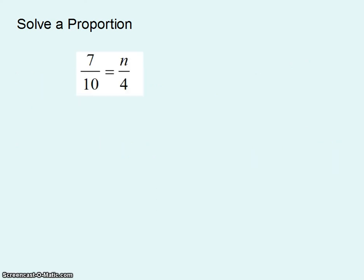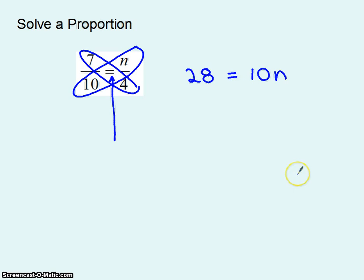So we're going to be solving this proportion here and the technique we'll use will be this. Multiply these two numbers together and you get 28. Multiply those two numbers together, you get 10n. Well the fact that there's an equal sign in the middle of this thing means that these two cross products have to be equal. Well if they're equal then we can easily find out what n is. Divide both sides by 10. n must be 2.8.